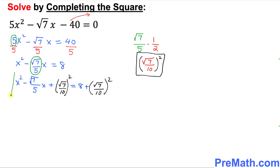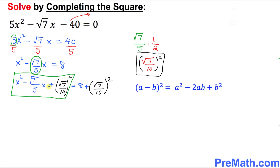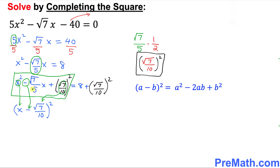Now focus on the left-hand side. It represents a complete square, so we use the well-known perfect square formula. We can write it as (x − √7/10)². The x came from the first term, the √7/10 quantity is the second term, and the negative sign appears in the middle.